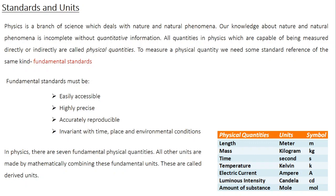When you choose a fundamental standard, it should have certain characteristics. First, it should be easily accessible, because people all over the globe need to make measurements using that standard. Second, it should be highly precise — the chances of error should be very small. Third, it should be accurately reproducible: a measurement in India and a measurement in Antarctica should give the same result. And fourth, the standard must be invariant with respect to time, place, and environmental condition.